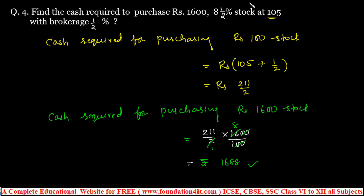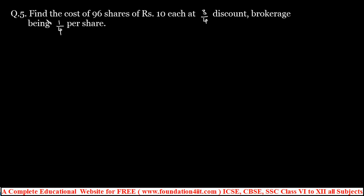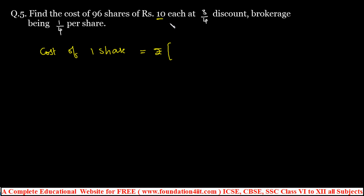Let us see questions on shares and dividend. Find the cost of 96 shares of rupees 10 each at 3/4 discount, with brokerage 1/4 per share. First, calculate the cost of 1 share. Rupees 10 each, with 3/4 discount subtracted and brokerage 1/4 added (since it's purchasing). So cost of 1 share = 10 − 3/4 + 1/4.